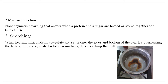When heating, milk protein circulates and settles on the sides and bottom of the pan. This is known as scorching. By overheating, the lactose in the coagulated solid caramelizes and causes the scorching. You can see here the picture of how scorching occurs.